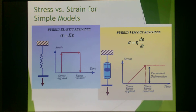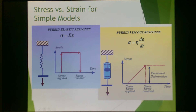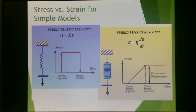For the spring: we apply the stress, there's a displacement, and when the stress is removed, the displacement goes back. For the dashpot: we apply a shear stress, a viscous strain is observed, and when the stress is removed, it relaxes back. So the spring produces an elastic-type response, and the dashpot produces a viscous-type response.